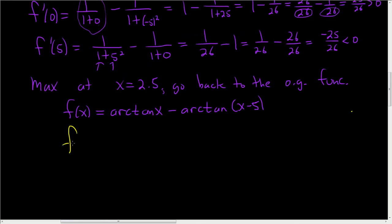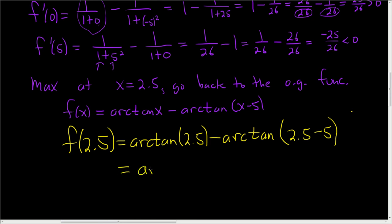So f of 2.5, plugging it back in. This is the arctan of 2.5 minus the arctan of 2.5 minus 5. So this is arctan of 2.5 minus, 2.5 minus 5 is negative 2.5.